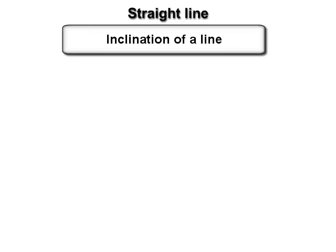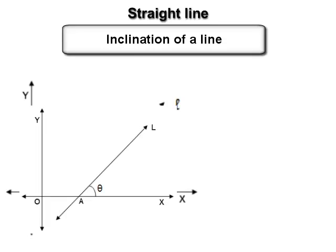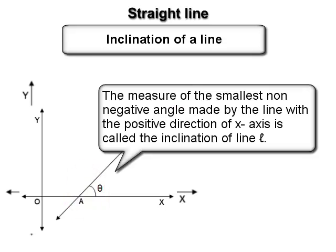In this chapter we will study properties of the simplest geometric figure, that is the straight line. Consider a line L which is not parallel to the x-axis and meets the x-axis at point A. The measure of the smallest non-negative angle made by the line with the positive direction of the x-axis is called the inclination of the line L.